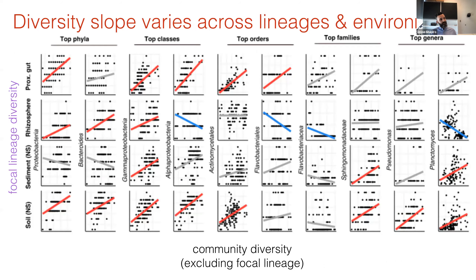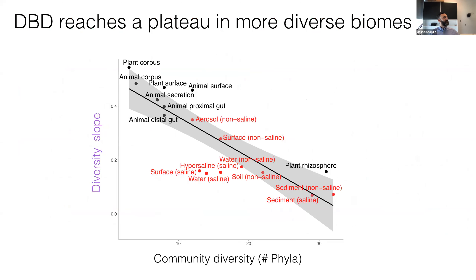We see that the diversity slope varies across lineages and environments — significant positive slopes in red, significant negative slopes in blue, and non-significant slopes in gray — across phyla down to genera in four representative environments: gut, rhizosphere, sediment, and soil, with 17 total environments. Abstracting further, the diversity slope is generally positive, so DVD is a general pattern, but it tends to reach a plateau as community diversity increases. More diverse free-living environments show lower DVD slopes compared to host-associated biomes.